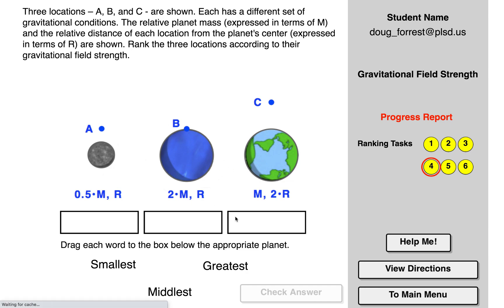Divided by the distance squared—those are the only things that really matter. In this particular case: smallest, greatest, middlest. If I look at this, this planet is mass m... 0.5 divided by r, so 0.5 over 1 squared would be 0.5. Two divided by 1 squared would be 2. Here, 1 divided by 2 squared is basically 1 over 4. So this should be the greatest, just drag it in. This I said was 1 over 4, this was 1 half, so this one should be the middlest.